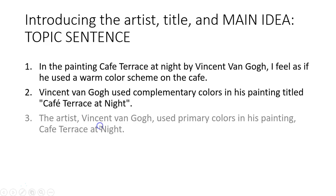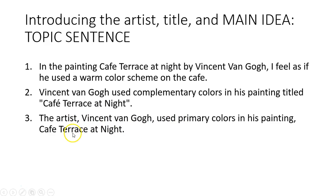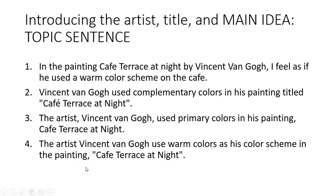Here's another one: 'The artist Vincent van Gogh used primary colors in his painting Café Terrace at Night.' Again, the color scheme isn't correct, but the introduction is wonderful — we've named the artist, named the title, and given the main idea, which is the color scheme in the painting. And one more: 'The artist Vincent van Gogh used warm colors as his color scheme in the painting Café Terrace at Night.' Again, we have the artist, the title, and the main idea. Those are some good examples.